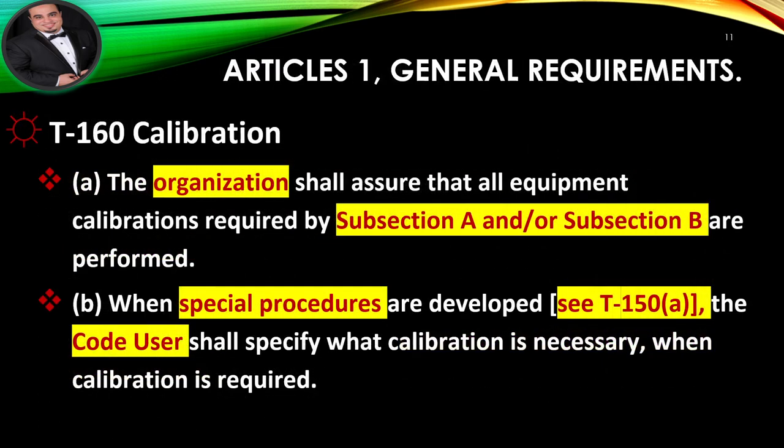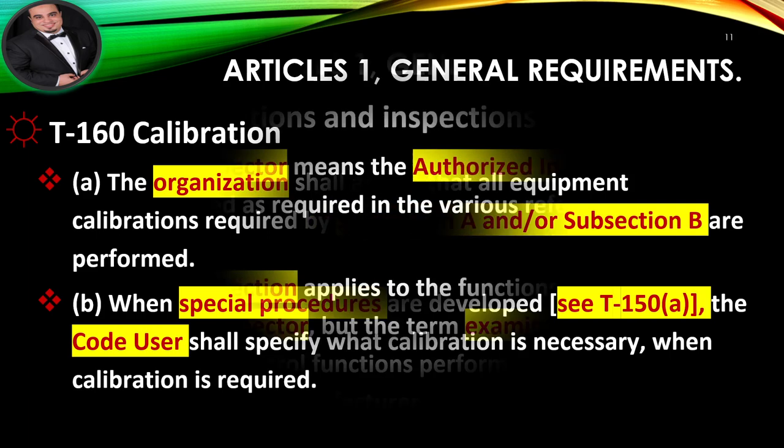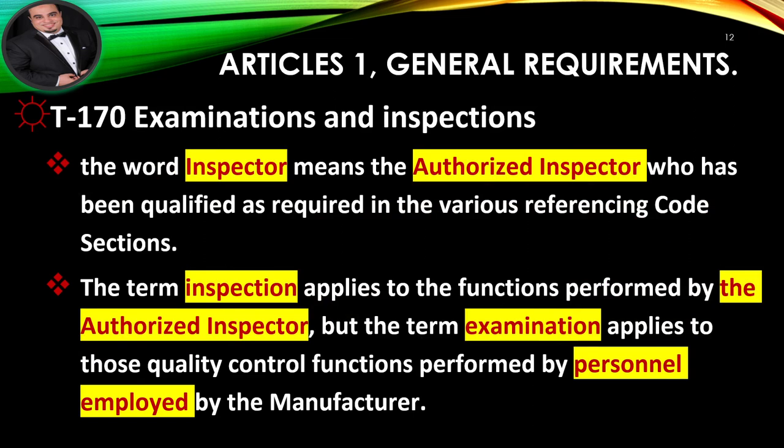The organization shall assure that all equipment calibrations required by Subsection A and/or Subsection B are performed. When special procedures are developed, the code user shall specify what calibration is necessary and when calibration is required. The word 'inspector' means the authorized inspector who has been qualified as required in the various referencing code sections. The term 'inspection' applies to the functions performed by the authorized inspector, but the term 'examination' applies to those quality control functions performed by personnel employed by the manufacturer.